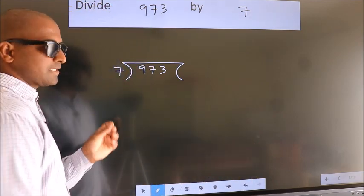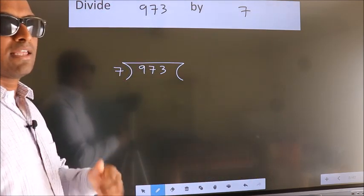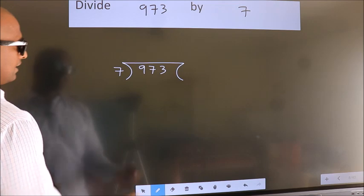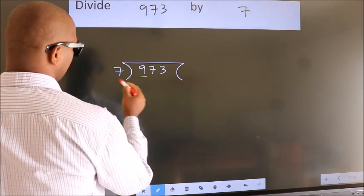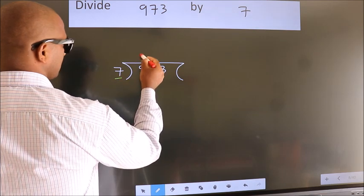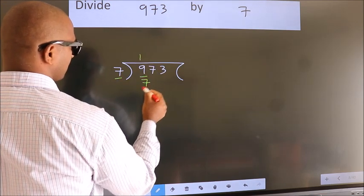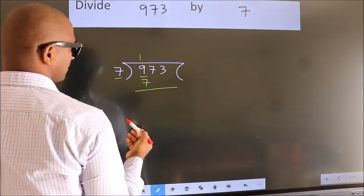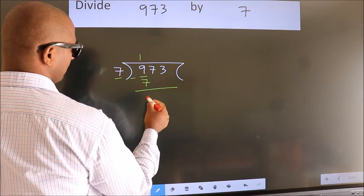This is your step 1. Next, here we have 9, here 7. A number close to 9 in the 7 table is 7 once 7. Now we should subtract. We get 2.